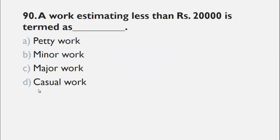MCQs number 90 is, a work estimating less than 20,000 rupees is termed as a petty work, b minor work, c major work, and d casual works. Petty work are those work which have estimated less than 20,000, minor work having estimated from 20,000 to 1 lakh, and major work are the work having estimated more than 1 lakh. So, the right choice for this question is a petty work.